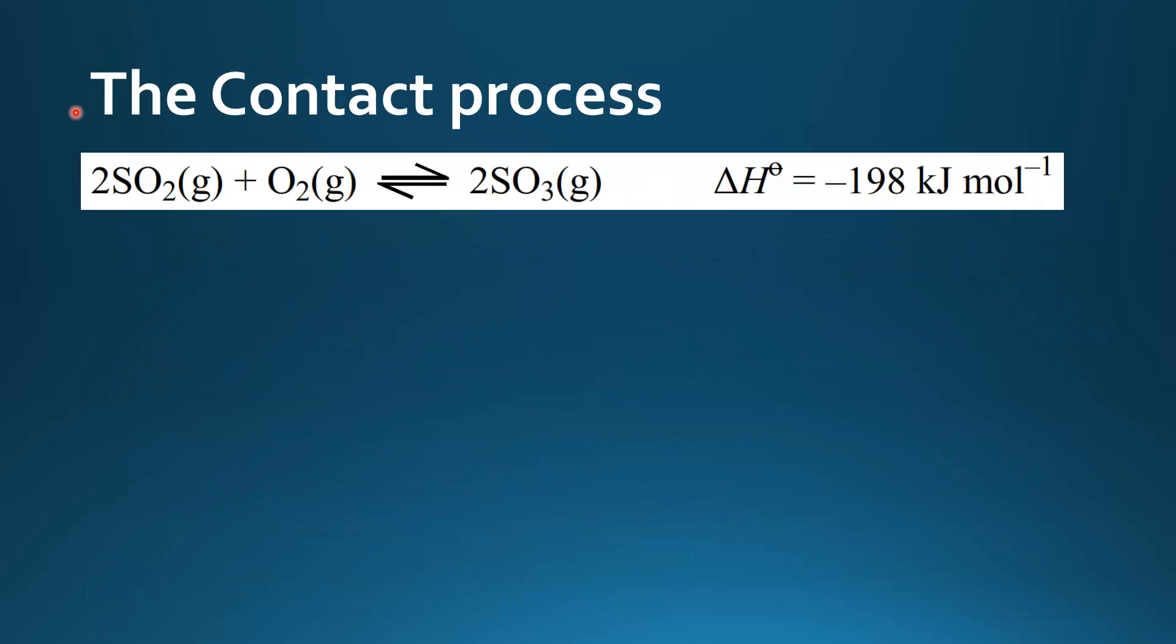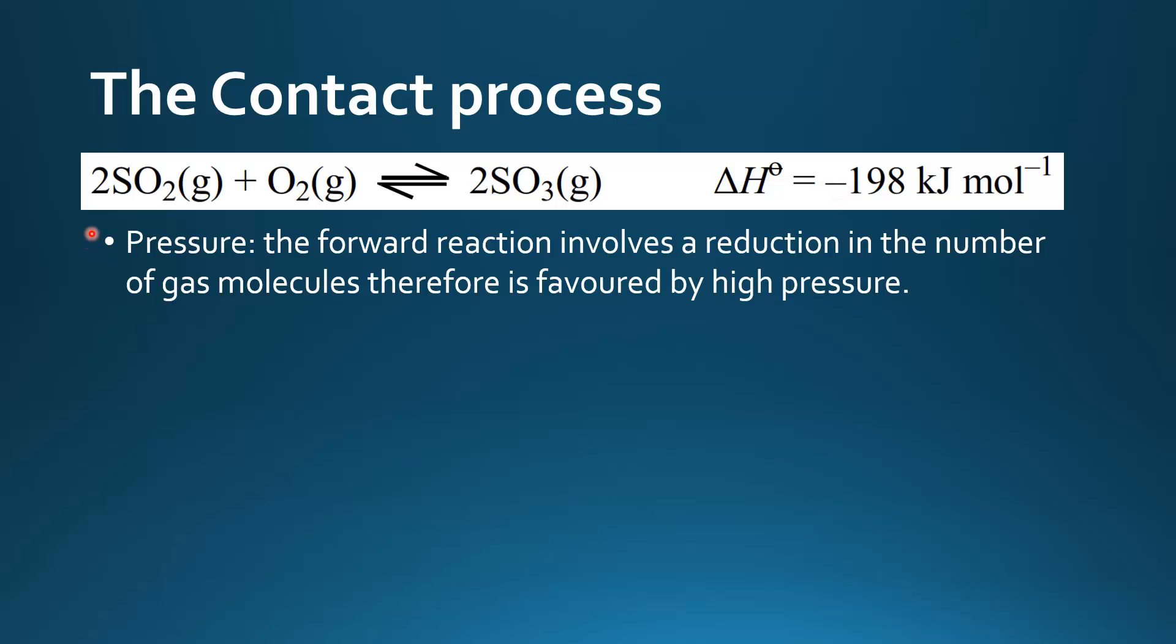Next is the Contact process. Sulfur dioxide reacts with oxygen to form sulfur trioxide. This is just one reaction from the contact process but this reaction determines the rate of reaction. The delta H is negative so it's an exothermic reaction.